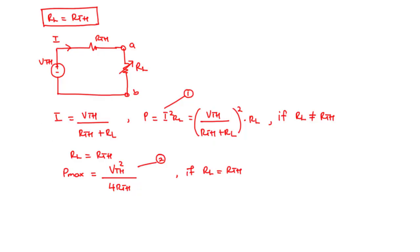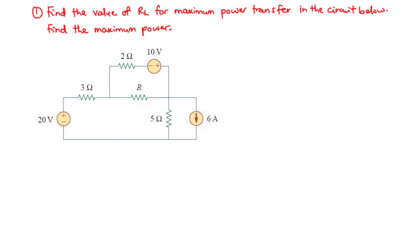Having this idea in mind, let's try an example. We are going to find the value of RL for maximum power transfer in the given circuit, and then find the maximum power. To solve this, we will first find the Thevenin's equivalent circuit — that is, find VTH and RTH — and then connect the load resistor RL. To find VTH, we remove the load resistor and mark the two open terminals.